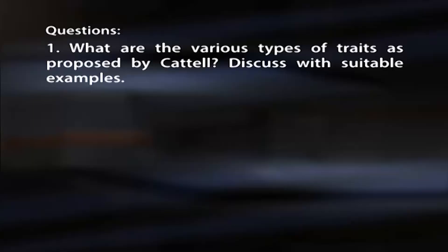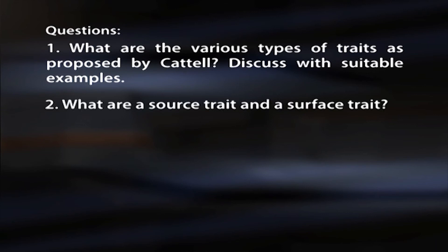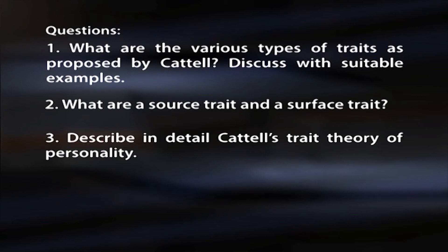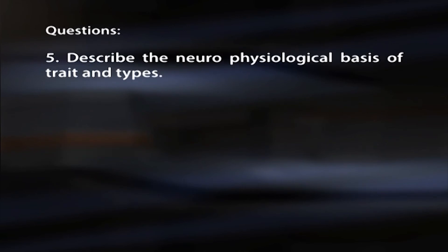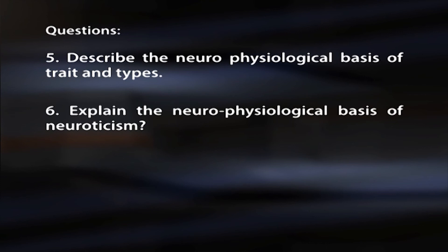Now you can try to answer the following questions: What are the various types of traits? Discuss with suitable examples. What are a source trait and a surface trait? Describe in detail Cattell's trait theory of personality. Explain Eysenck's trait-type theory of personality. Describe the neurophysiological basis of traits and types. Explain the neurophysiological basis of neuroticism.